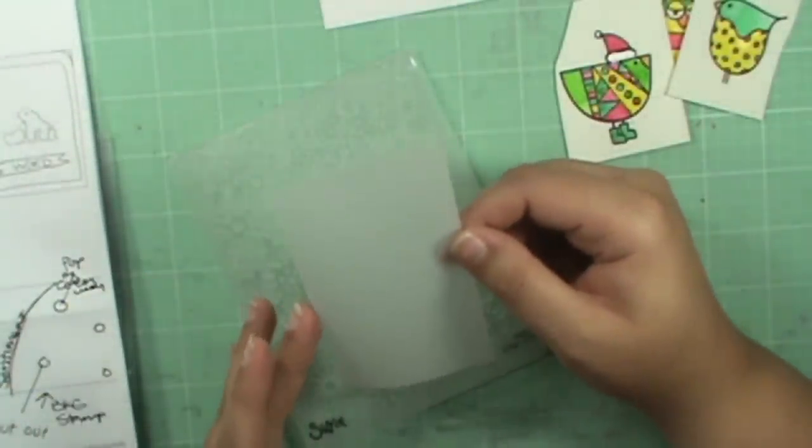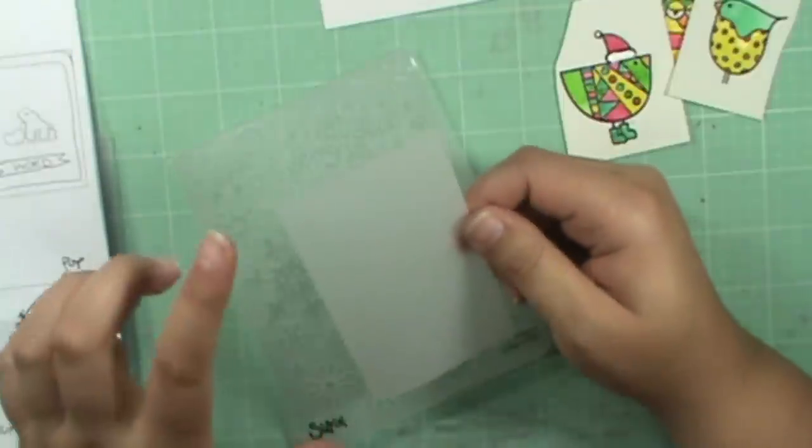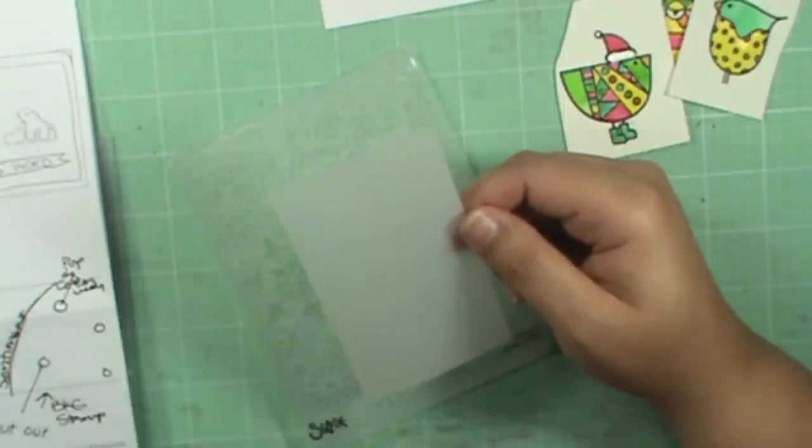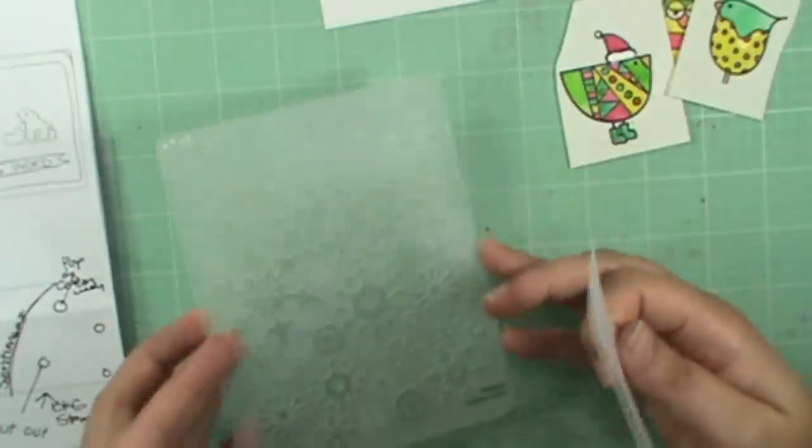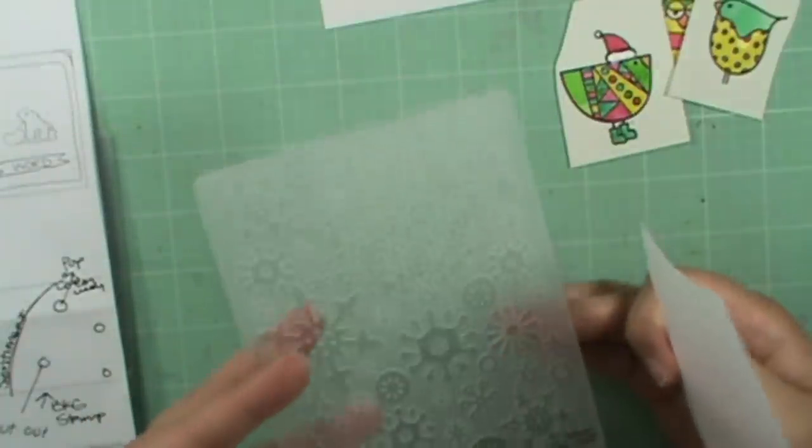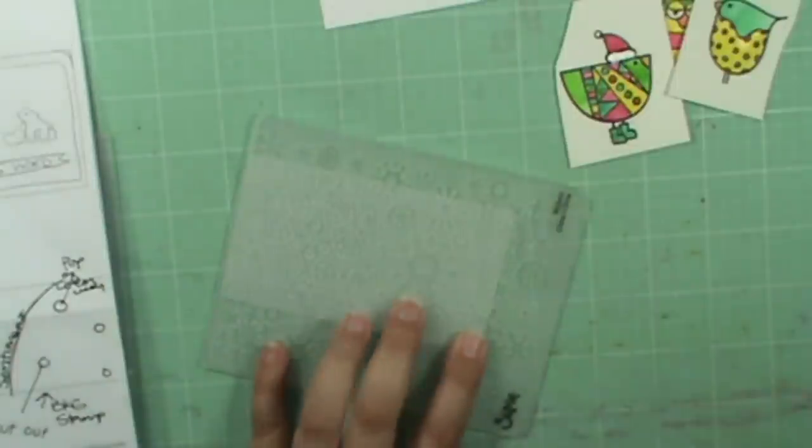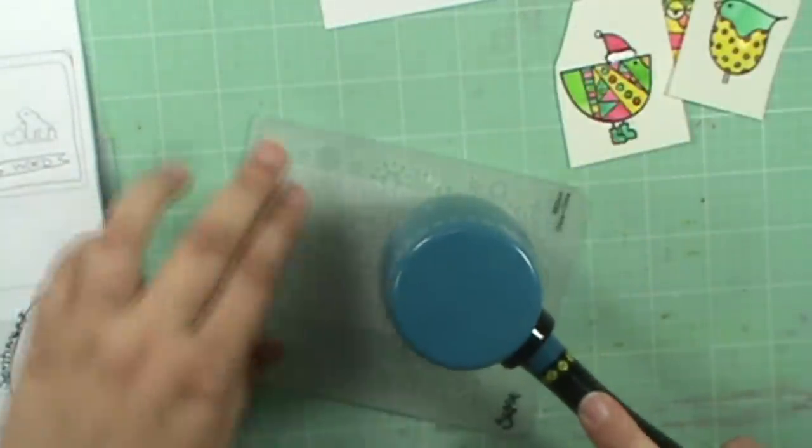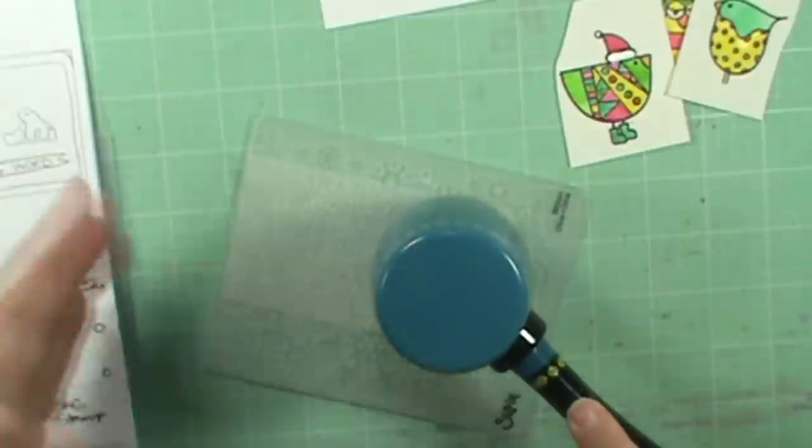I have this piece of vellum that is two and a half inches by four inches. I'm going to take it and put it into this Sizzix snowflake embossing folder. Instead of running it through my die cutting machine, I'm going to take a rubber mallet and hit it a few times.